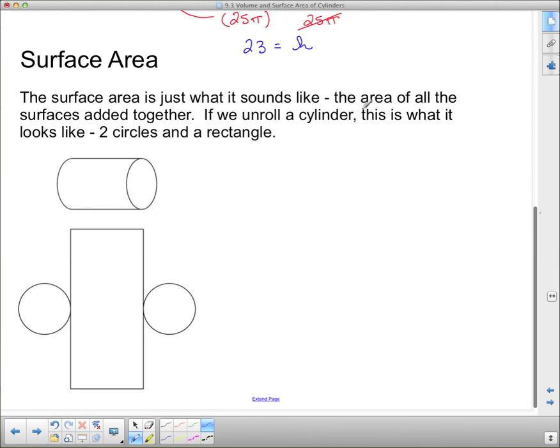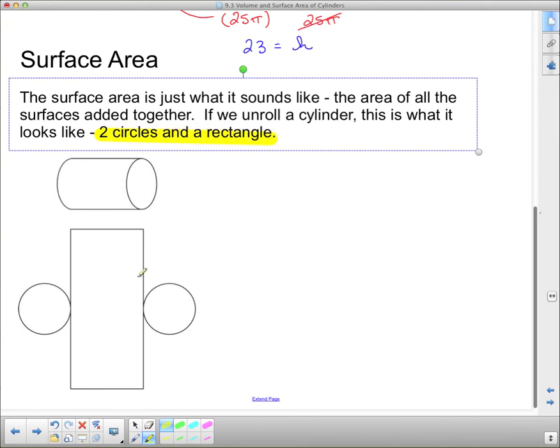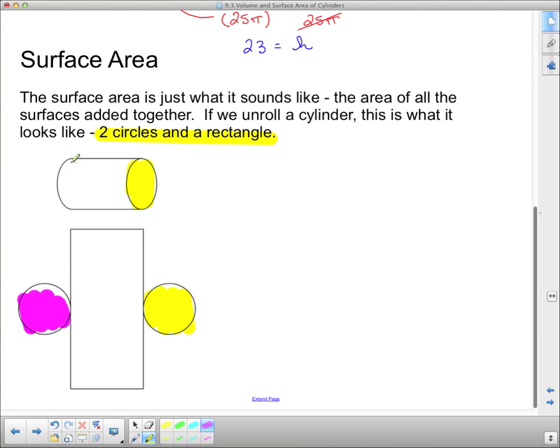Okay, so that concludes our examples on volume. Now we're going to take a look at surface area. Now surface area is just what it sounds like. It's the area of all the surfaces added together. All of them. If we unroll a cylinder, it's two circles and one rectangle as it looks down here. So we've unrolled this cylinder. This circle here corresponds to this circle here, and then this circle here is the bottom of the can.